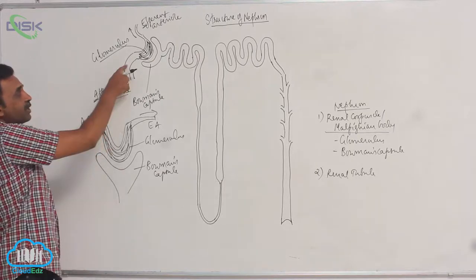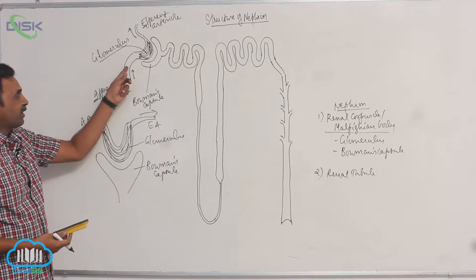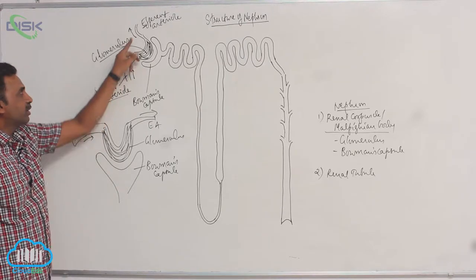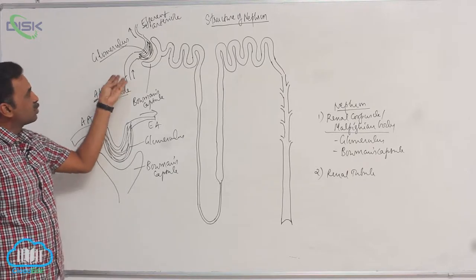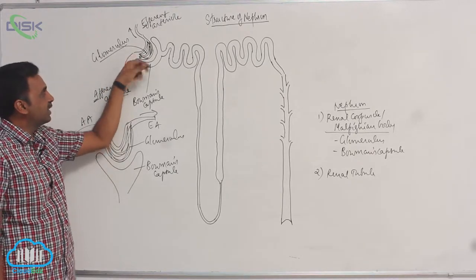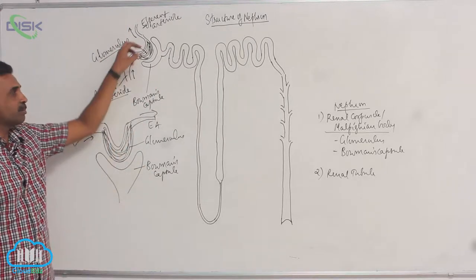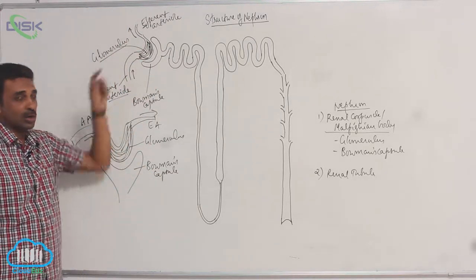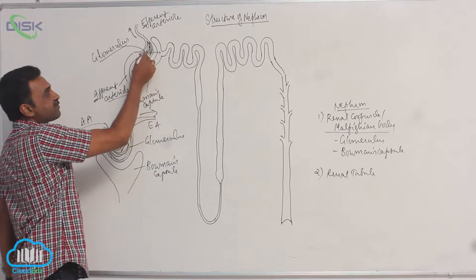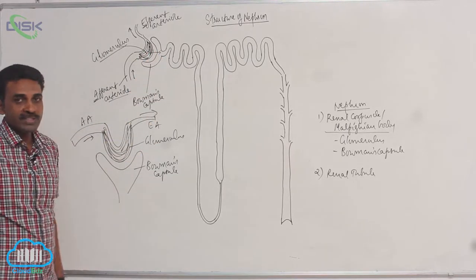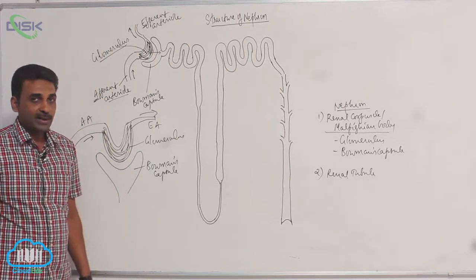Note the difference in diameter between the afferent and efferent arterioles. The afferent arteriole is larger in diameter, and the efferent arteriole is smaller. So naturally, more blood comes inside the glomerulus than goes out, building up pressure inside. Under this pressure, some fluid is filtered from the glomerulus into Bowman's capsule.